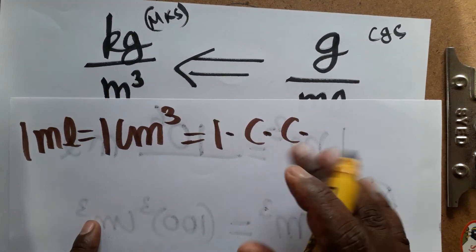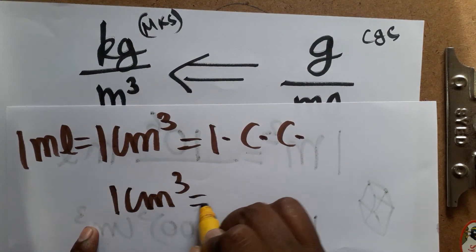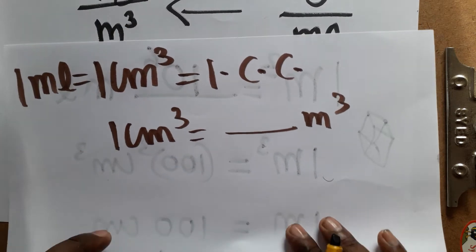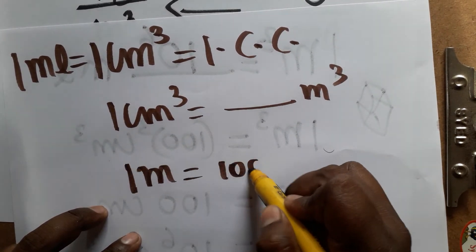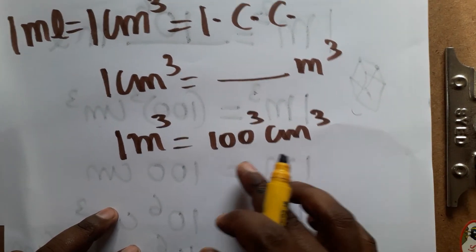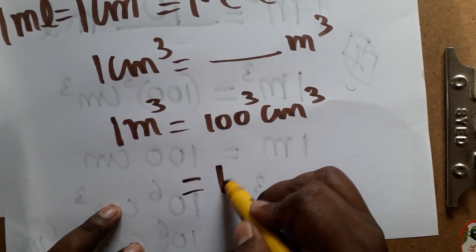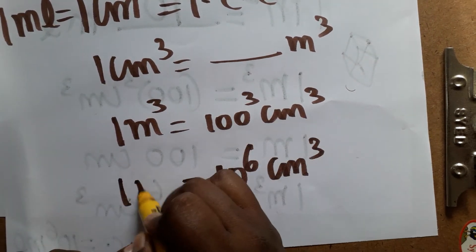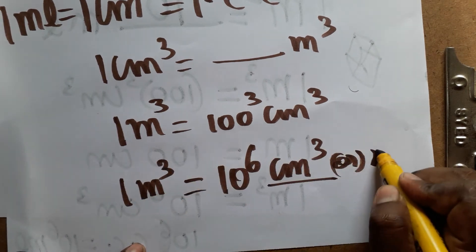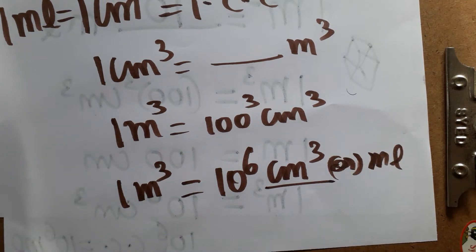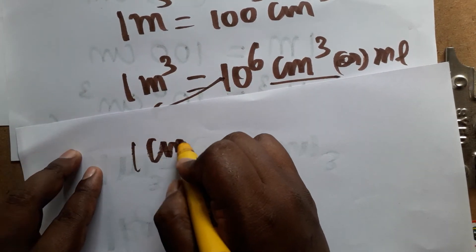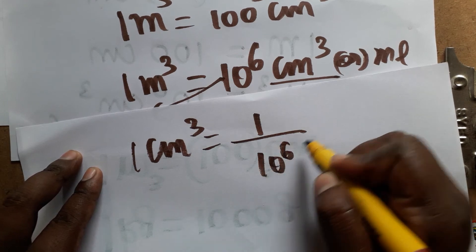Now we convert centimeter cube to meter cube. One meter is 100 centimeters, so one meter cube is 100 cubed centimeter cube. 100 cubed is 100 × 100 × 100, which equals 10 to the power 6. So 10 power 6 centimeter cube equals 1 meter cube, meaning one centimeter cube equals 1 divided by 10 power 6 meter cube.